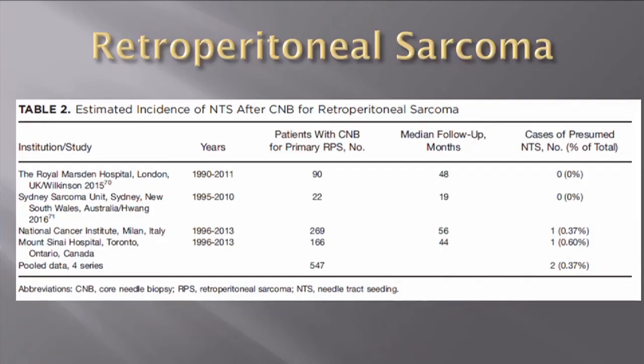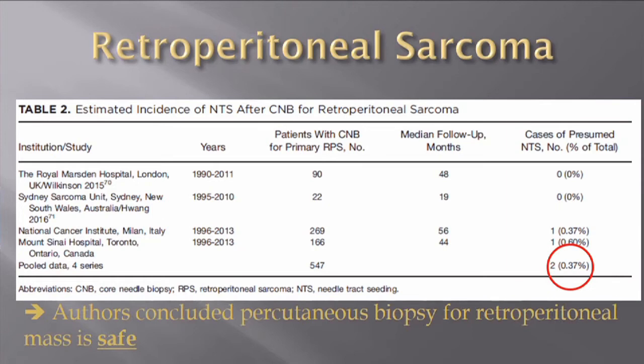The second part of the same study looked at retroperitoneal sarcoma. They looked at various institutions in London, Sydney, Milan, and Toronto, ending up with 547 patients who all received percutaneous core needle biopsy of their retroperitoneal mass, which ended up being sarcomas. Only 2 out of 547 were presumed to have needle tract seeding — that's 0.37%. The authors concluded that retroperitoneal masses are safe to biopsy.